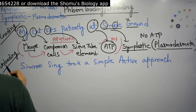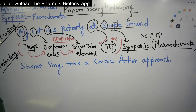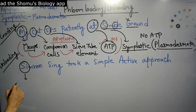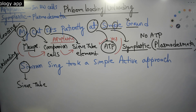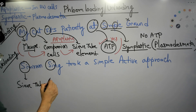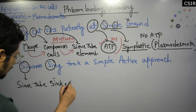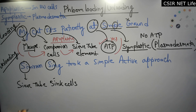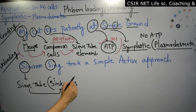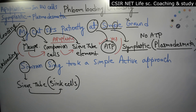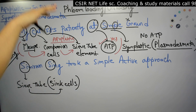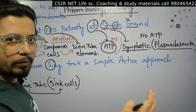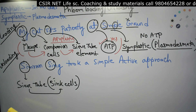Now we move to phloem unloading. For phloem unloading, we start with SI — sieve tube elements — and then another SI for sink cells. So the movement is from sieve tube to sink cells. Sink cells are the ultimate destination cells where food needs to be delivered. The source is the mesophyll where synthesis occurs; the sink is all the other cells where sucrose is delivered.